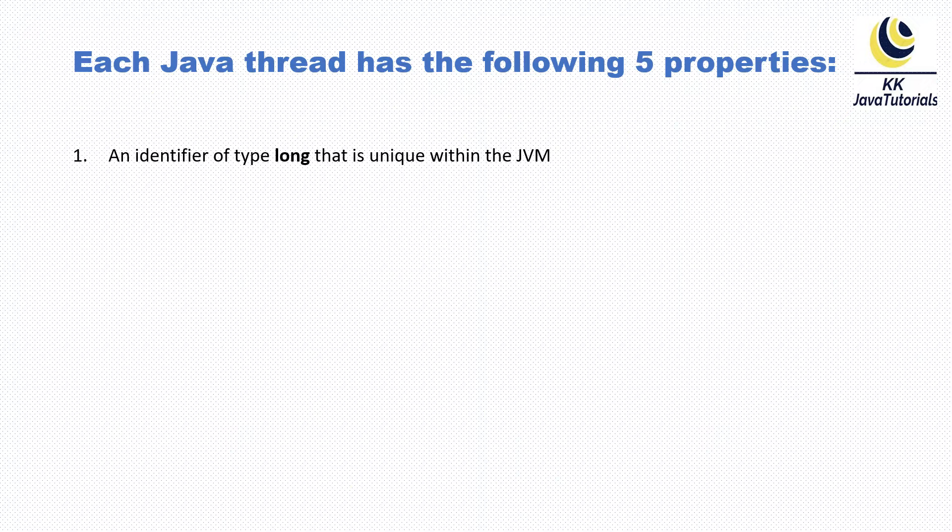Each Java thread has the following five properties. Let's try to understand each and every property. First property: an identifier of type long that is a unique number within the JVM.